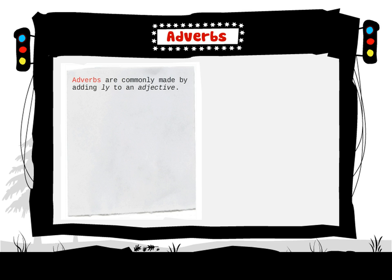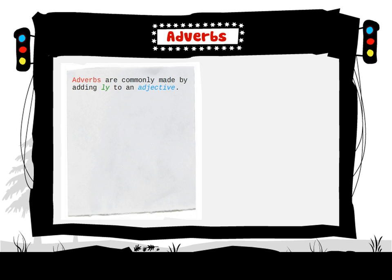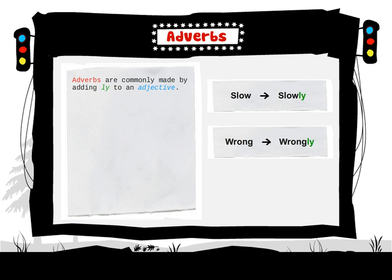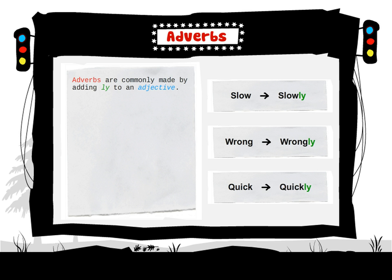Adverbs are commonly made by adding -ly to an adjective. For example: slow → slowly, wrong → wrongly, quick → quickly, etc.